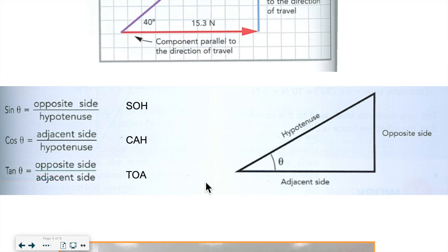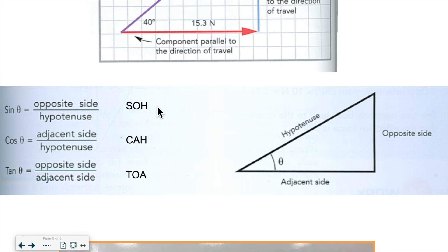These are the trigonometry rules you probably learned in math. Sine is opposite over hypotenuse, cosine is adjacent over hypotenuse, and tangent — which we won't be using here — is opposite over adjacent. You may have used the mnemonic SOHCAHTOA to remember these equations: sine of the angle equals opposite over hypotenuse, cosine equals adjacent over hypotenuse, and tangent equals opposite over adjacent. We're always referring to the angle, so adjacent means adjacent to the angle, and opposite means opposite to the angle. The hypotenuse is opposite the right angle.